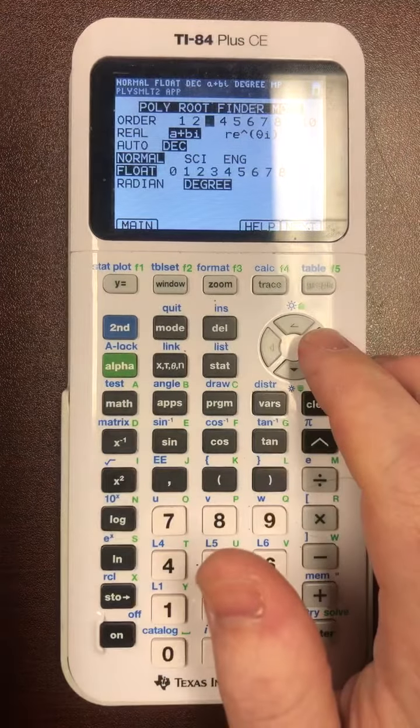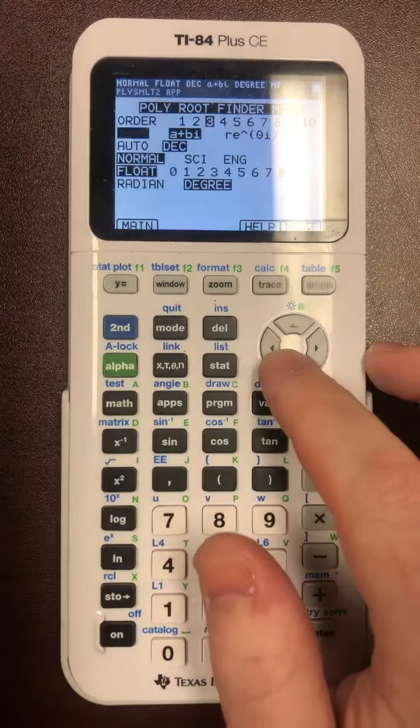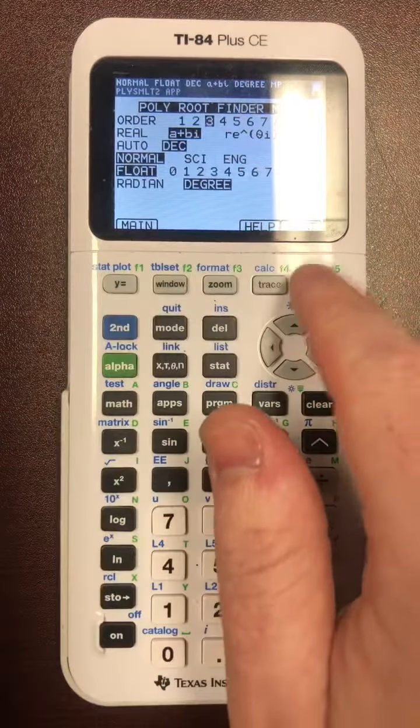Now the order, because that problem the highest power is 3, you put order is 3. You always want to be on A plus BI, then you hit the next button right here.